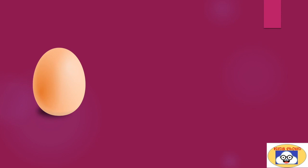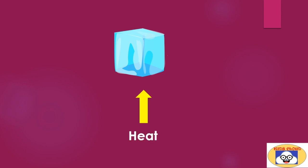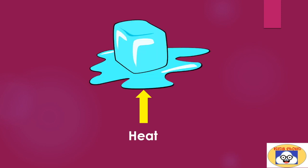Everyone knows that at normal temperature an egg is in liquid form, but it gets solidified when you heat or boil it. Here is one different example: when we heat an ice cube or simply keep it outside the freezer, it starts melting — an increase in temperature melts the ice. But unlike ice, the egg solidifies after heating or boiling. Don't you feel this is interesting? Let's understand together why it happens.